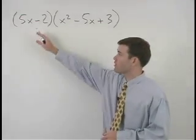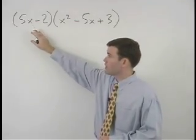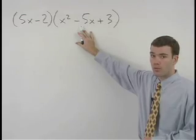To multiply a binomial times a trinomial, we simply distribute each of the terms in the binomial through all three terms in the trinomial.